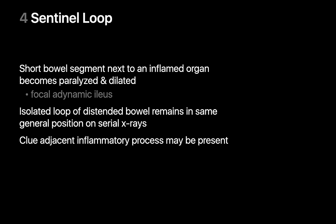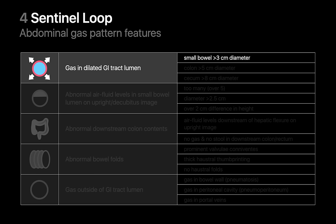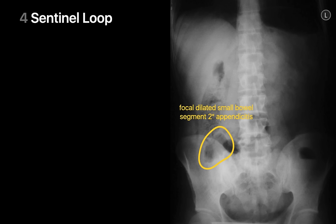A sentinel loop can occur when a focal inflammatory process in the abdomen leads to focal adynamic ileus within a short segment of adjacent small bowel. A sentinel loop in the right upper quadrant can occur with disorders like acute cholecystitis or pyelonephritis, while a sentinel loop in the right lower quadrant may occur with appendicitis. The x-ray finding is straightforward — a short segment of dilated small bowel. In this example, a short segment of gas-filled dilated small bowel is present in the right lower quadrant in a patient ultimately diagnosed with acute appendicitis.